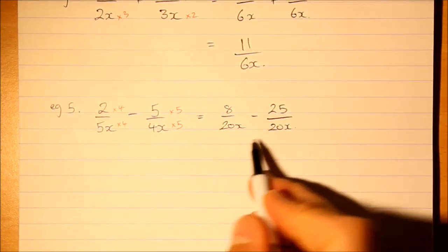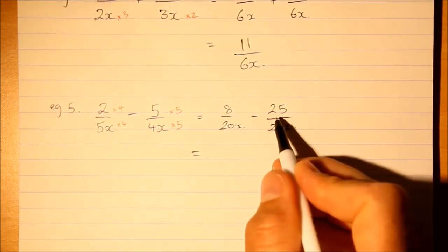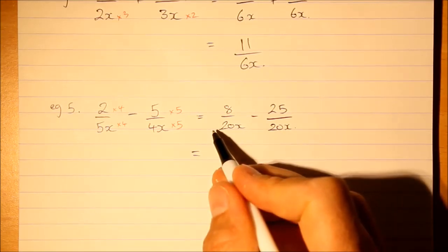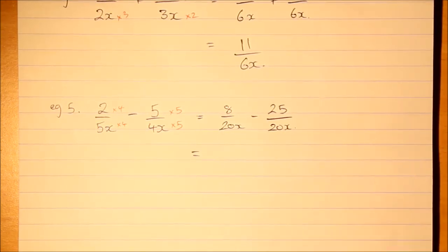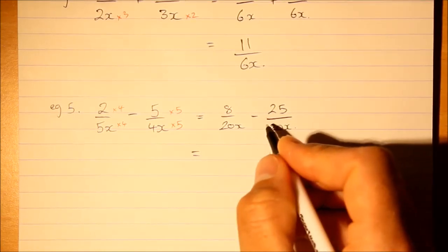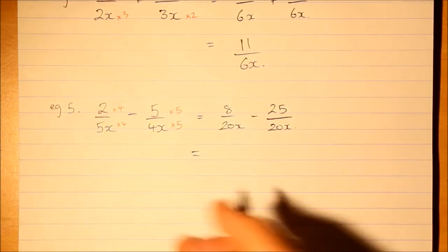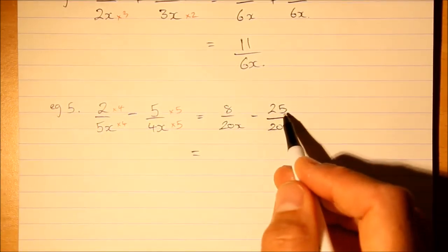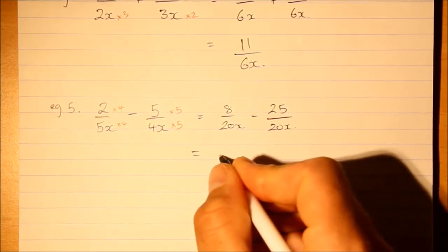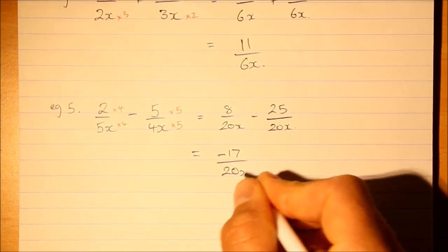The denominators are the same so we can subtract. This fraction on the right is larger than the fraction on the left, so we're going to have a negative result. If you find the difference between these two, then make that a negative. So that's negative 19 over 20x.